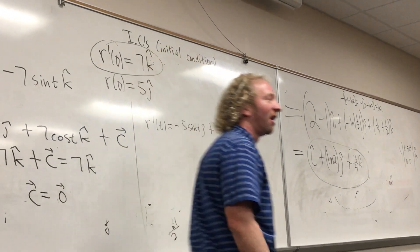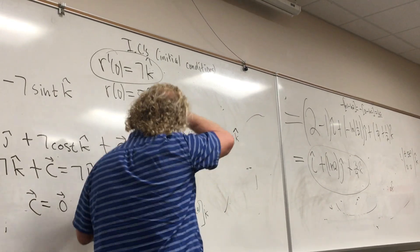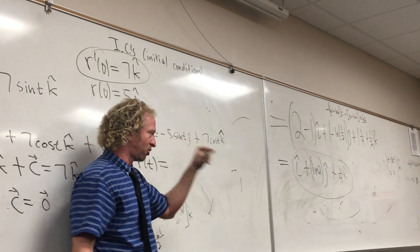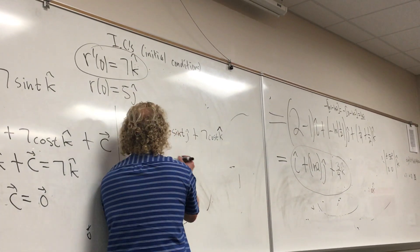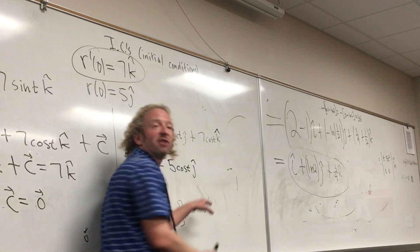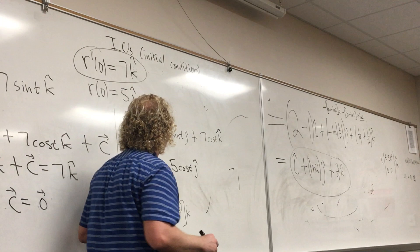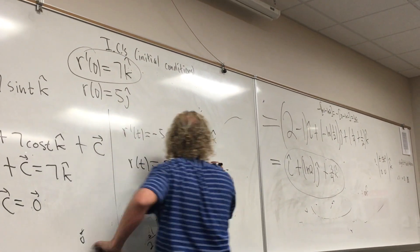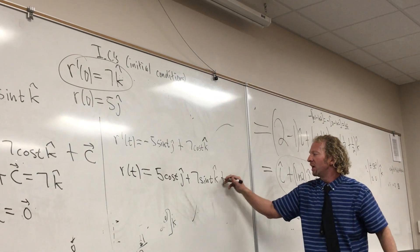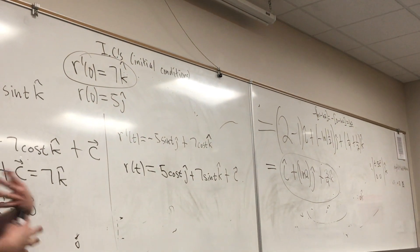So what do we do next? Integrate again. R of t. We're integrating negative sine, so that gives us cosine. Cosine t — because the derivative of cosine is negative sine. And then this one's just going to be sine t. It's good homework — it's just calculus, derivatives, integrals, all mixed into one section. Kind of a fun section. It's good review.